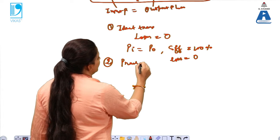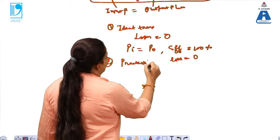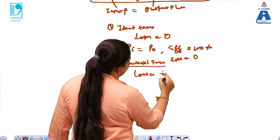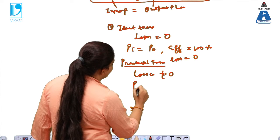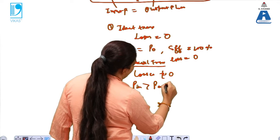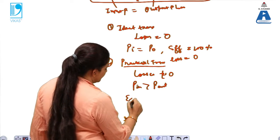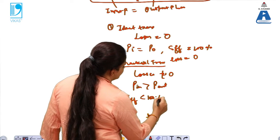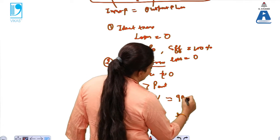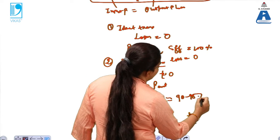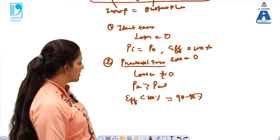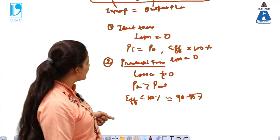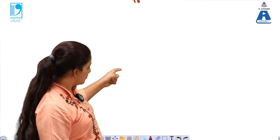In the case of a practical transformer, losses are non-zero. P_input is greater than P_output, and efficiency is less than 100%. In practice, the efficiency of a transformer is around 90 to 95%. This distinguishes the ideal transformer from the practical transformer, and from these we can calculate efficiency as well as losses.